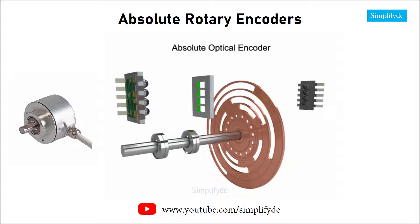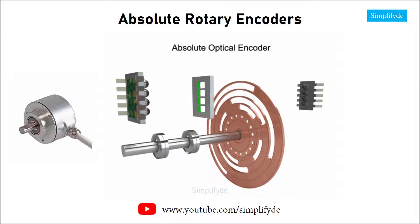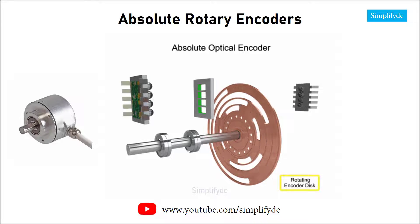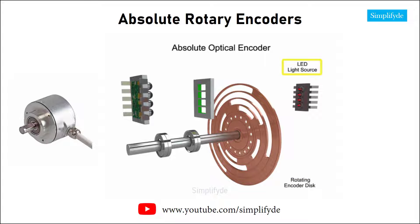The most common type of feedback device is the absolute optical encoder. An absolute encoder consists of four major components: a rotating encoder disk, a light source such as an LED, a photo detector as the light sensor, and a signal conditioner that converts the signals into square waveform.